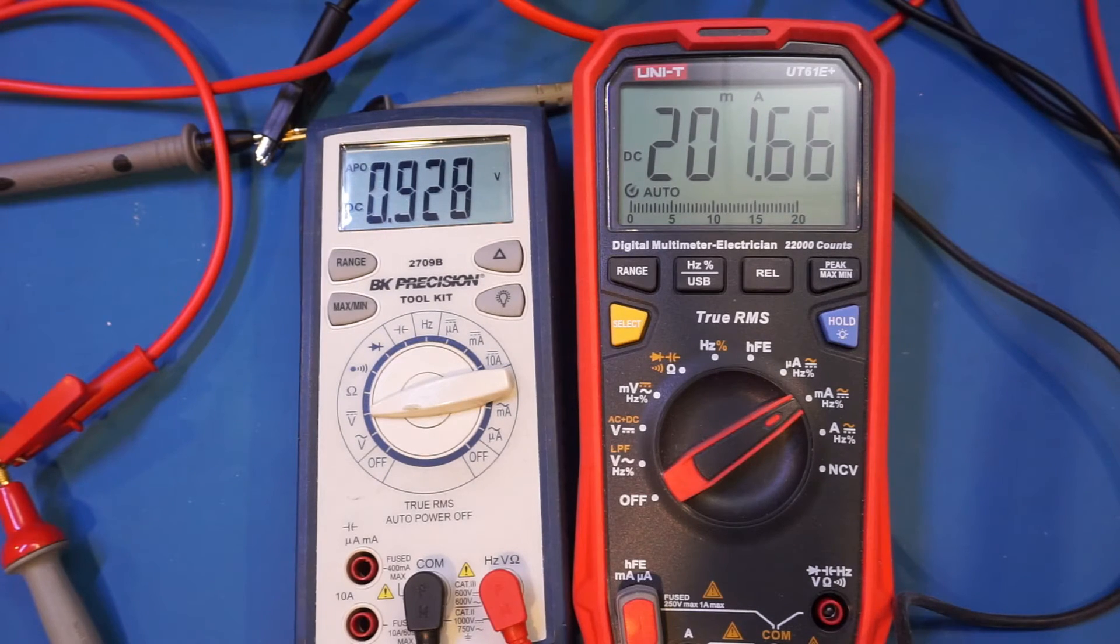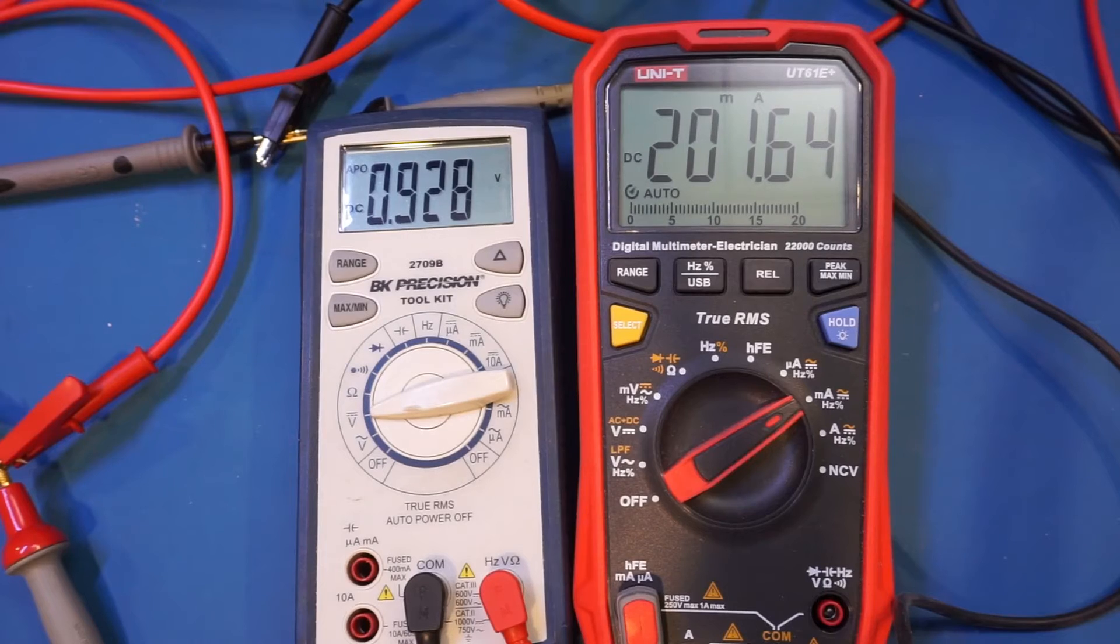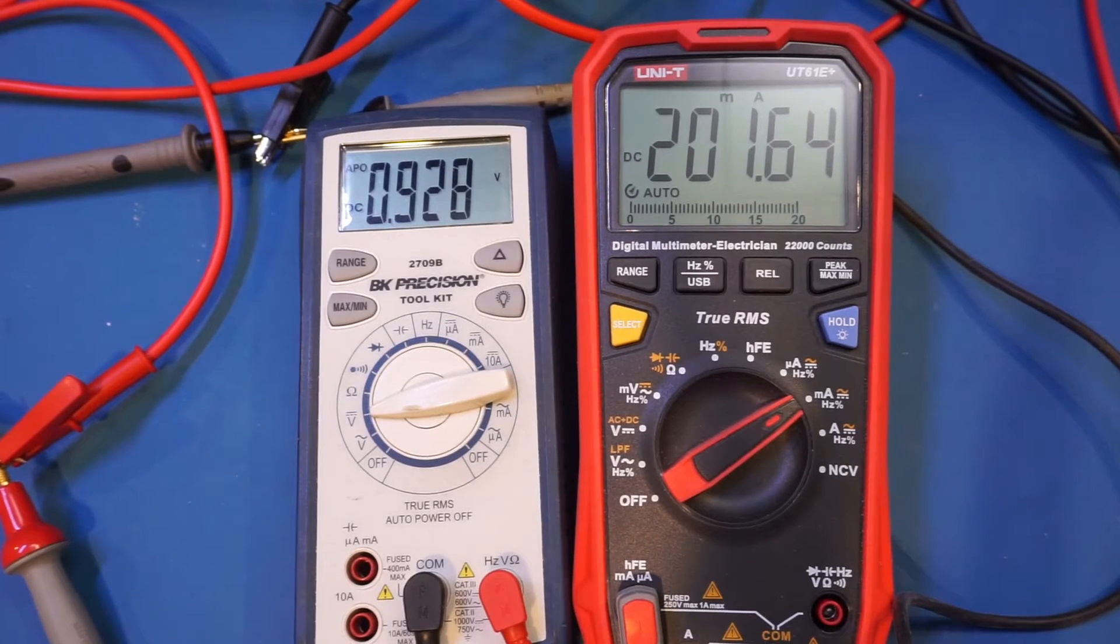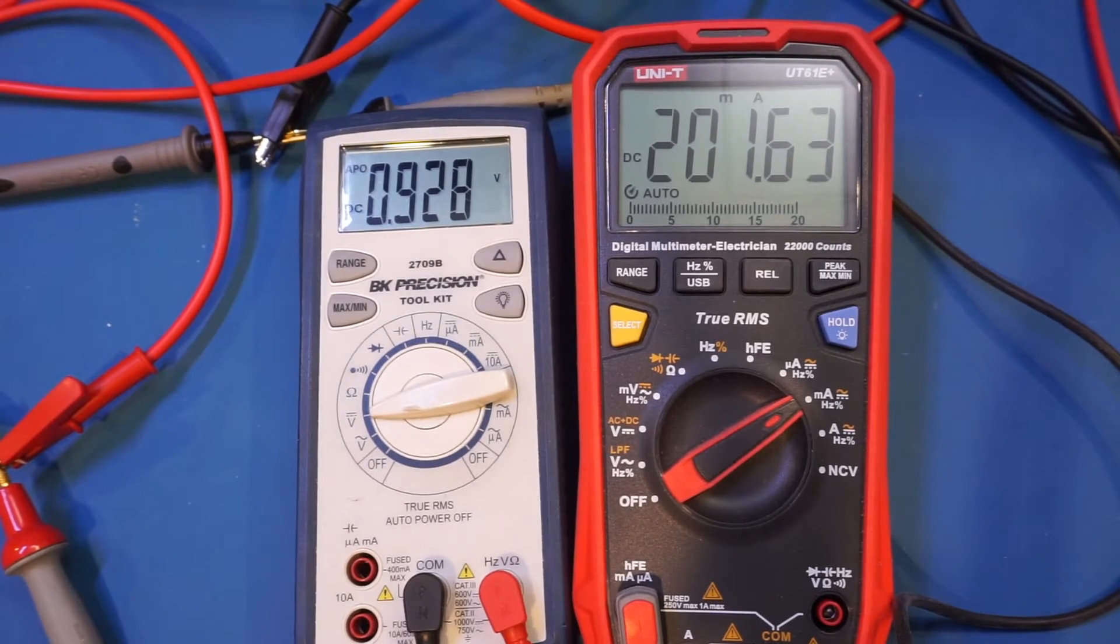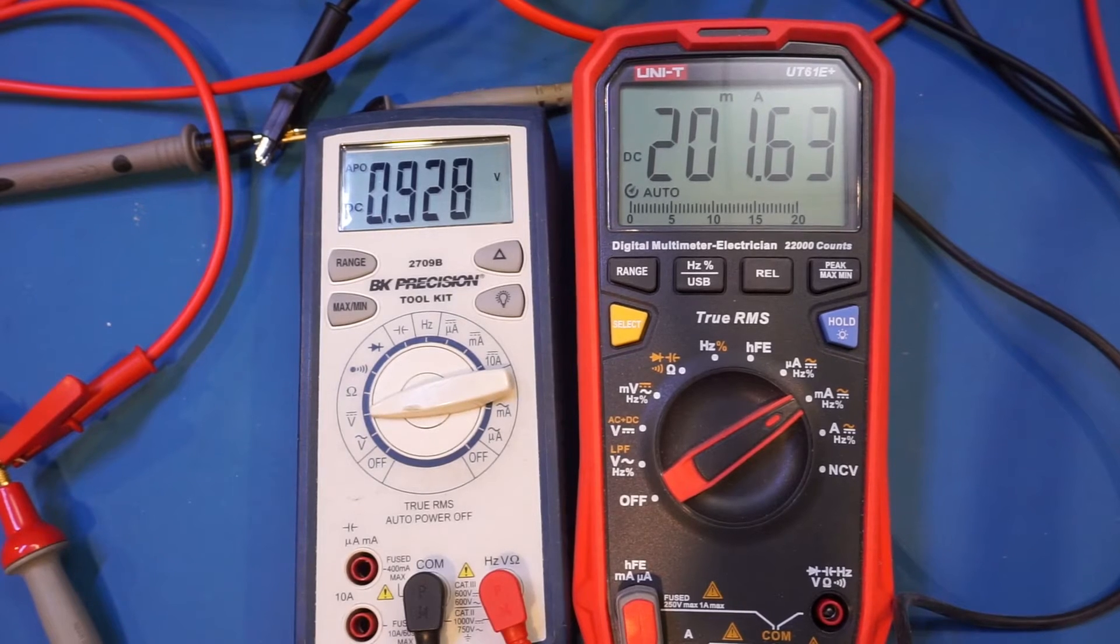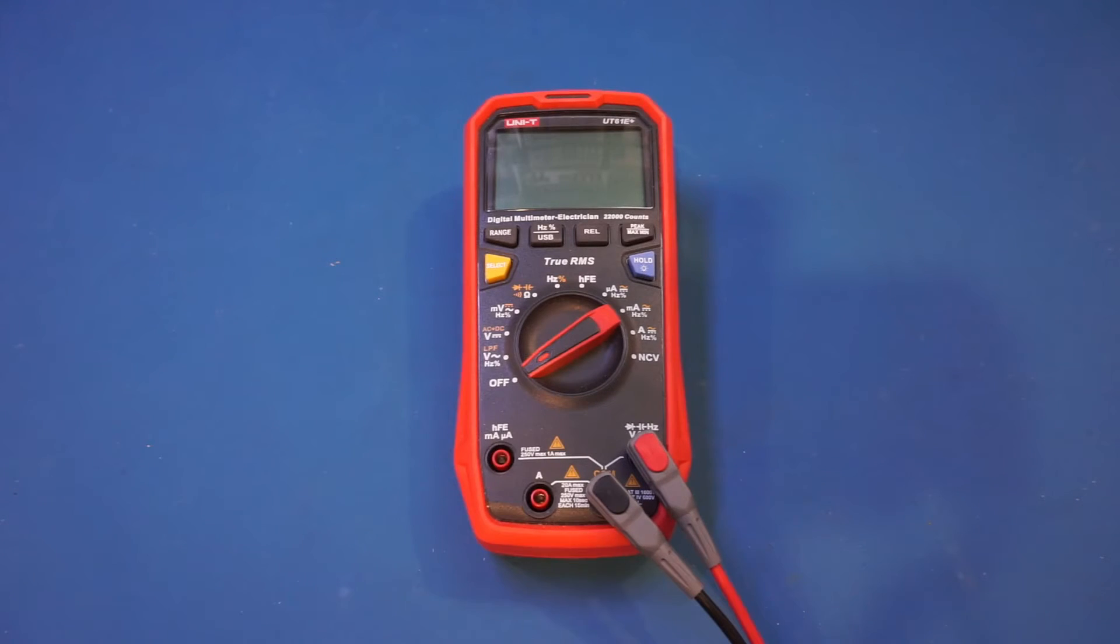With that said, you can easily avoid this problem by switching to a higher range, and given the high count of this meter, you can still get very accurate measurement results without encountering the unnecessary voltage drop with a higher range.